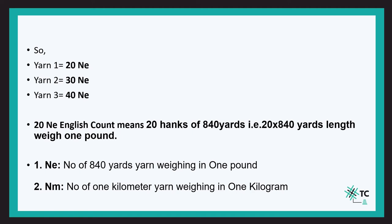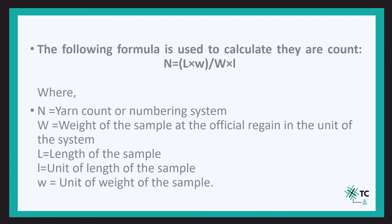Similarly, if it were 20 Nm (metric count), that means 20 hanks of 1 kilometer each — that is 20 kilometers — of yarn weighs 1 kilogram. This was the indirect counting system.